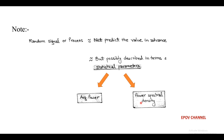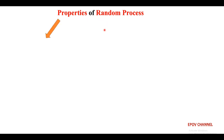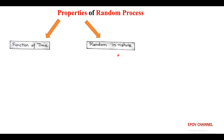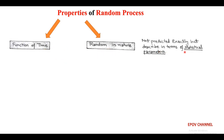Next, let us discuss the properties of random process. Random process is basically a function of time, also random in nature. Because of these two properties, the random process cannot be predicted exactly, but can easily be analyzed in terms of statistical parameters such as average power and power spectral density.